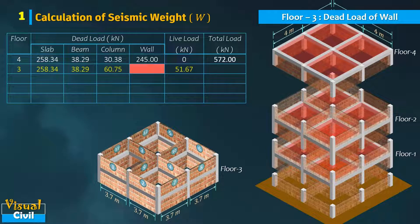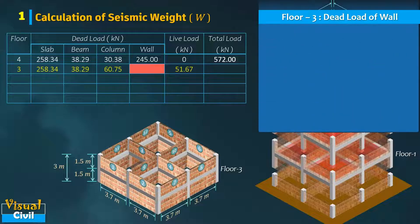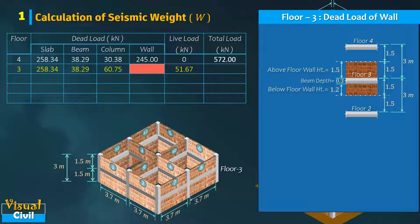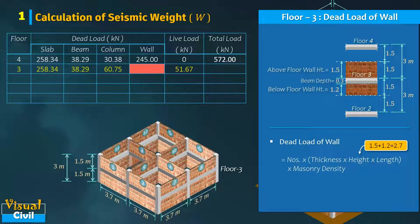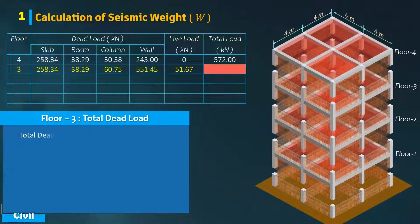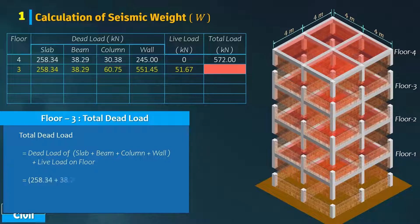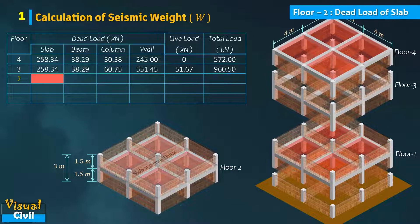Next, compute dead load of wall. Here 1.5 meter height of the storey above and below the floor will be considered for the wall dead load. The wall height above the floor is 1.5 meter, but below the floor the actual height of the wall to be considered is equal to 1.2 meters after deducting the depth of beam as shown in figure, hence the total height of wall including above and below the floor is equal to 2.7 meters. After calculation, the dead load of wall is equal to 551.45 kilo newton. Now compute the total load at third floor by adding dead load of slab, beam, column, wall, and live load on the floor. After computation, we get the total load equal to 960.5 kilo newton.